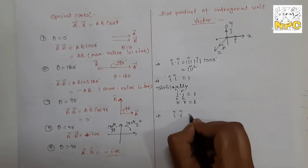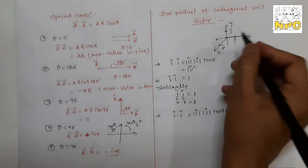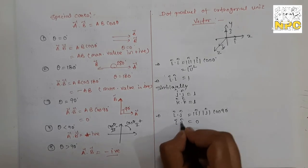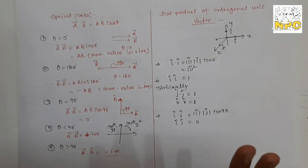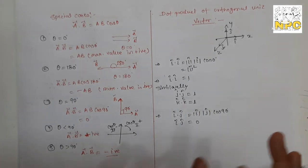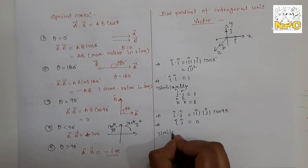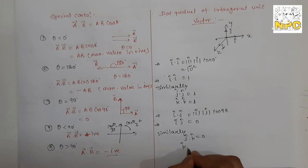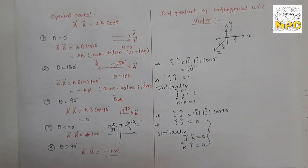Now if we take two different unit vectors, for example i dot j, since all the unit vectors are perpendicular to each other, the angle is 90 degrees. So i dot j equals the magnitude of i times the magnitude of j times cos 90, which equals 1 × 1 × 0 = 0. Similarly, j dot k equals 0 and k dot i equals 0. This defines all the unit vector dot product values.